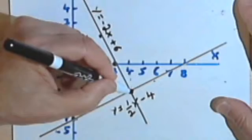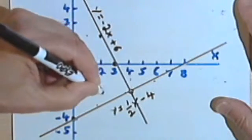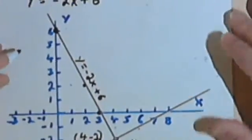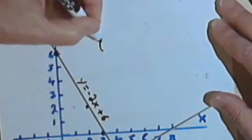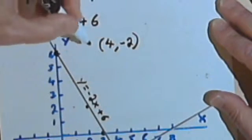So this point is 4, comma, negative 2. So I can write my answer as an ordered pair: (4, -2).